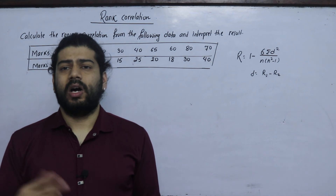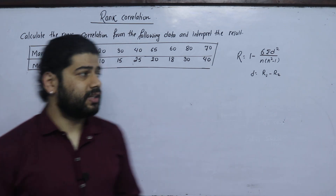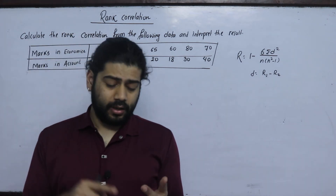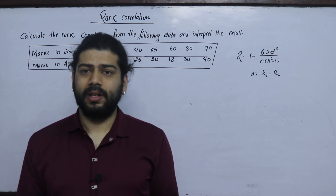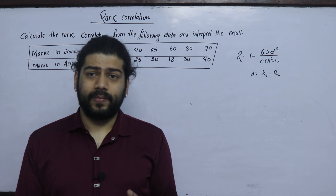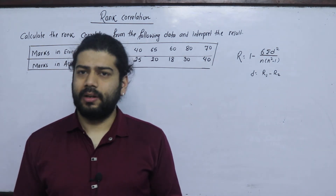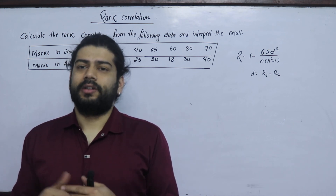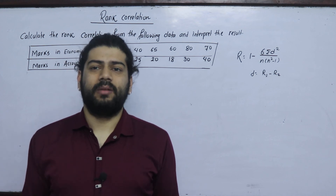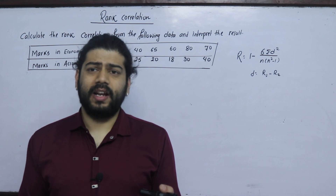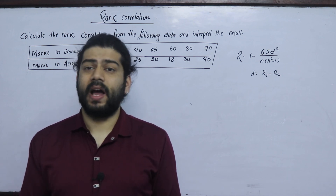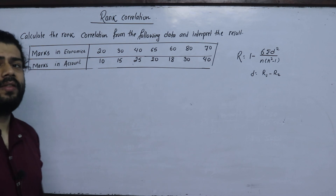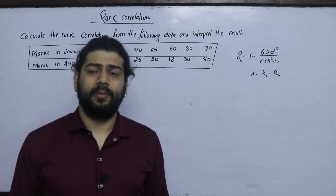Rank correlation is a type of correlation. For example, in economics and accounts, consider a top student in economics — if they also rank highly in accounts, that is a positive type correlation. If a student ranks lower in one subject compared to the other, that is a negative type correlation. We are ranking two subjects.